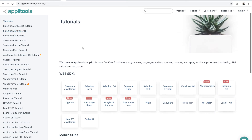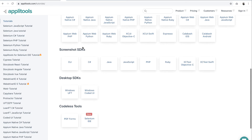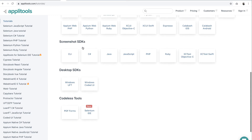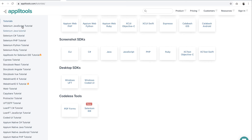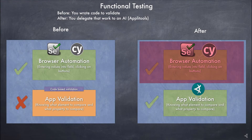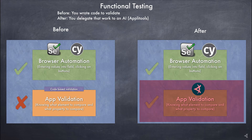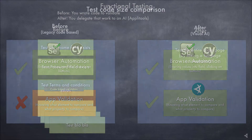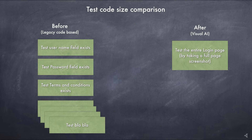Applitools provides various SDKs to work with your existing test frameworks and programming languages, so you don't need to rip and replace your existing work. You will still use Selenium, Cypress, Appium, etc. for navigation and data entry, but you delegate the validation to the AI. Since you are taking screenshots of the entire page in most cases, you don't need to write a lot of tests to check individual elements. You'll end up with a lot less code and dramatically high test coverage.